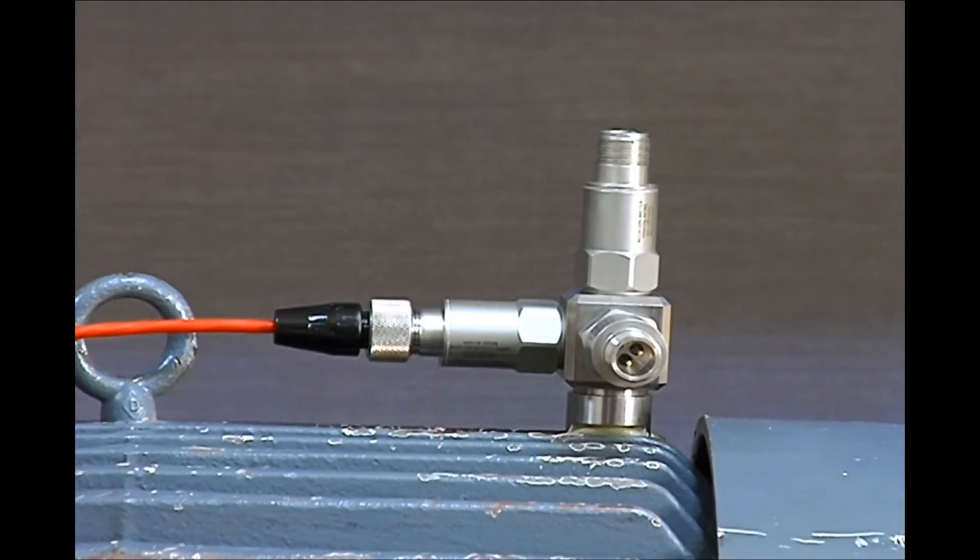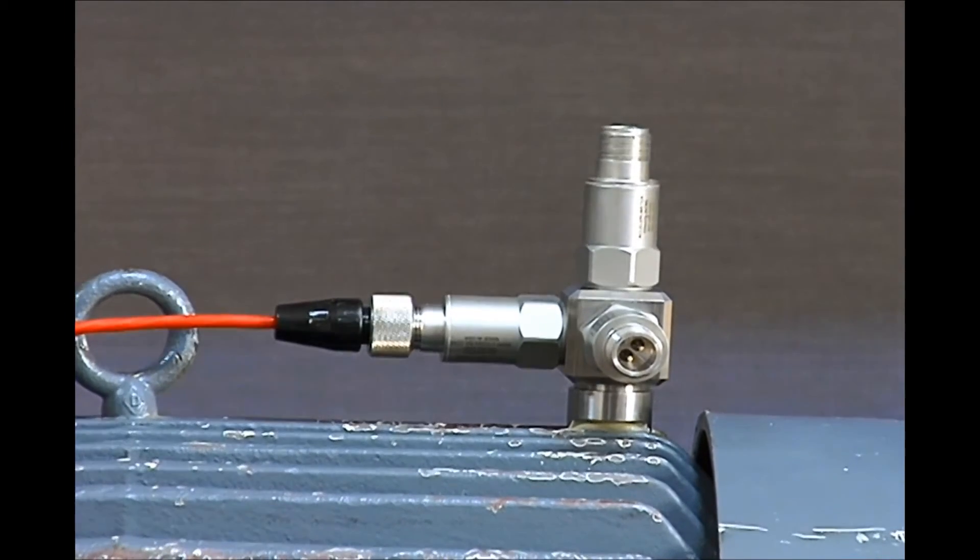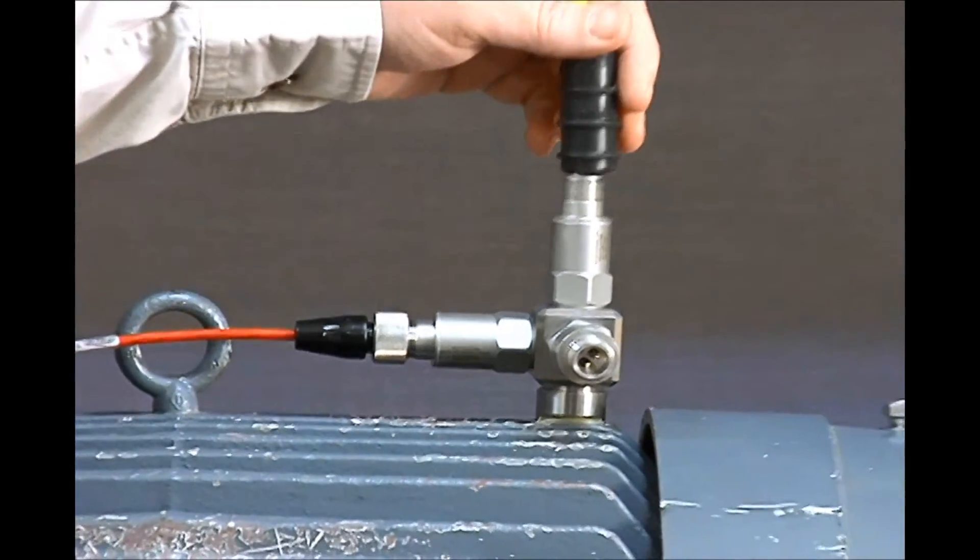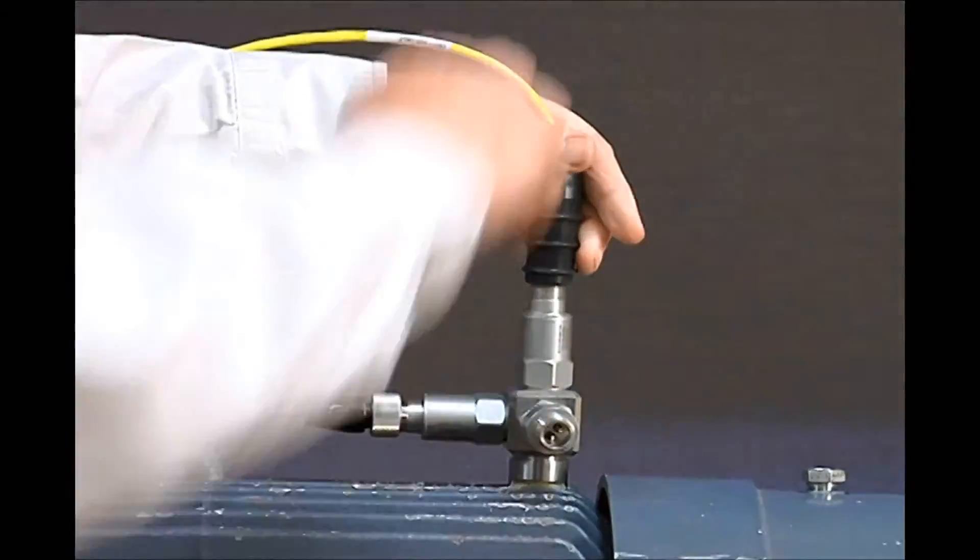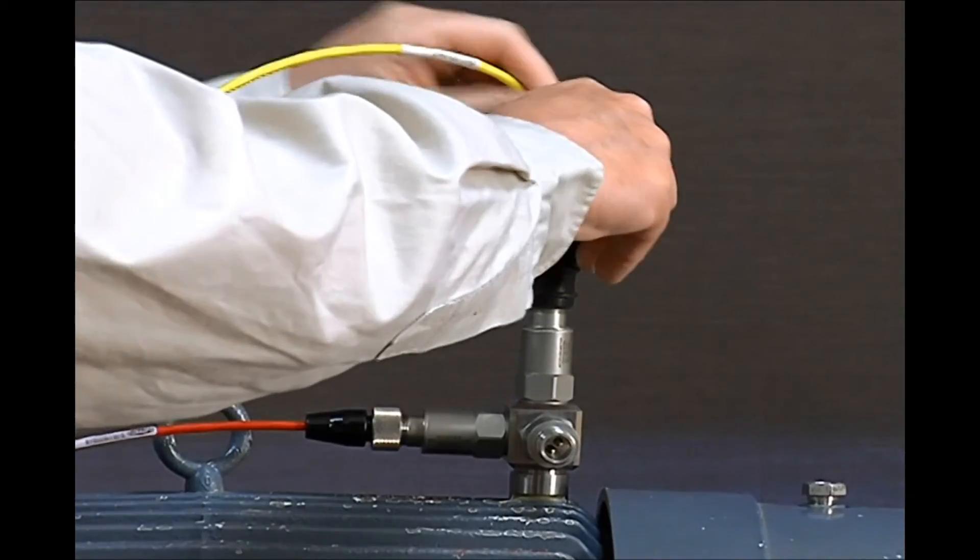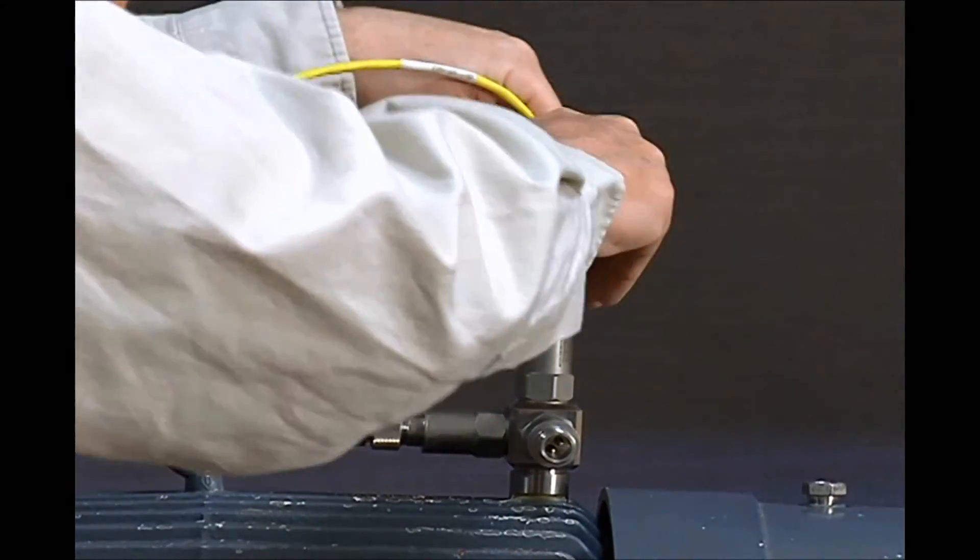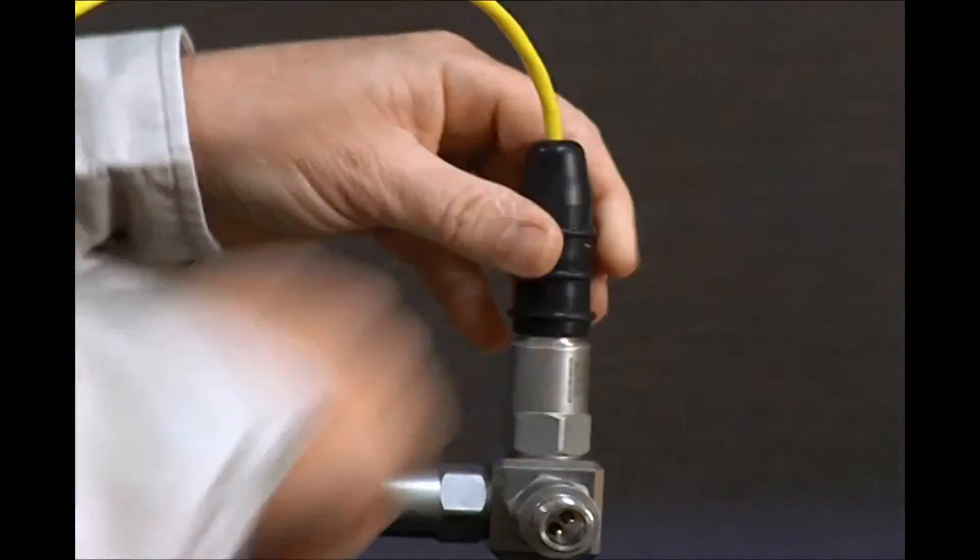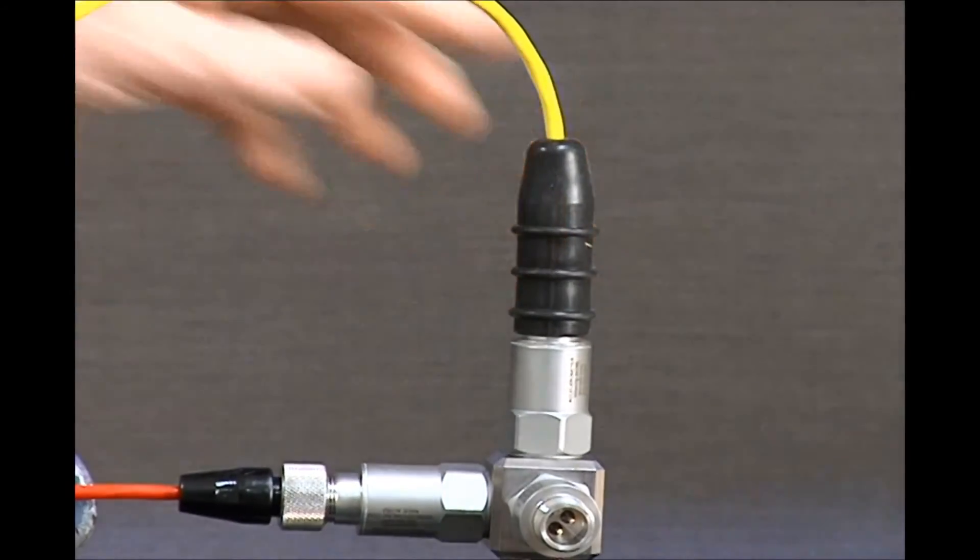Our B2N connector is a silicone boot with a nylon insert. Simply line up the keyway and slide it firmly onto the sensor, securely fastened.